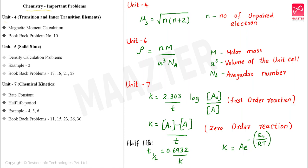First, we will talk about Unit 4, Transition and Inner Transition Elements. In this unit, we will talk about the magnetic moment calculation related problems. That is book back problem number 10. The magnetic moment — that is spin-only magnetic moment — we calculate using the formula: mu is equal to root of n(n+2). When the number of unpaired electrons is 0, it is diamagnetic in nature.